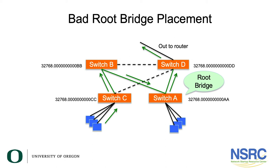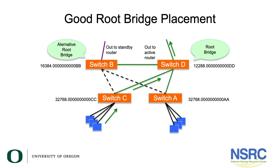What you'd want instead is to set the priorities manually. Instead of the default 32768, you'd set the bridge priorities for your distribution switches — for example, 12288 for switch D and 16384 for switch B, making switch B your alternate route and switch D your root bridge. This even allows a second link to the core router on switch B in case switch D fails. Now the packet from switch C goes straight to switch D and out to the core, with dotted lines indicating ports in the blocking state.